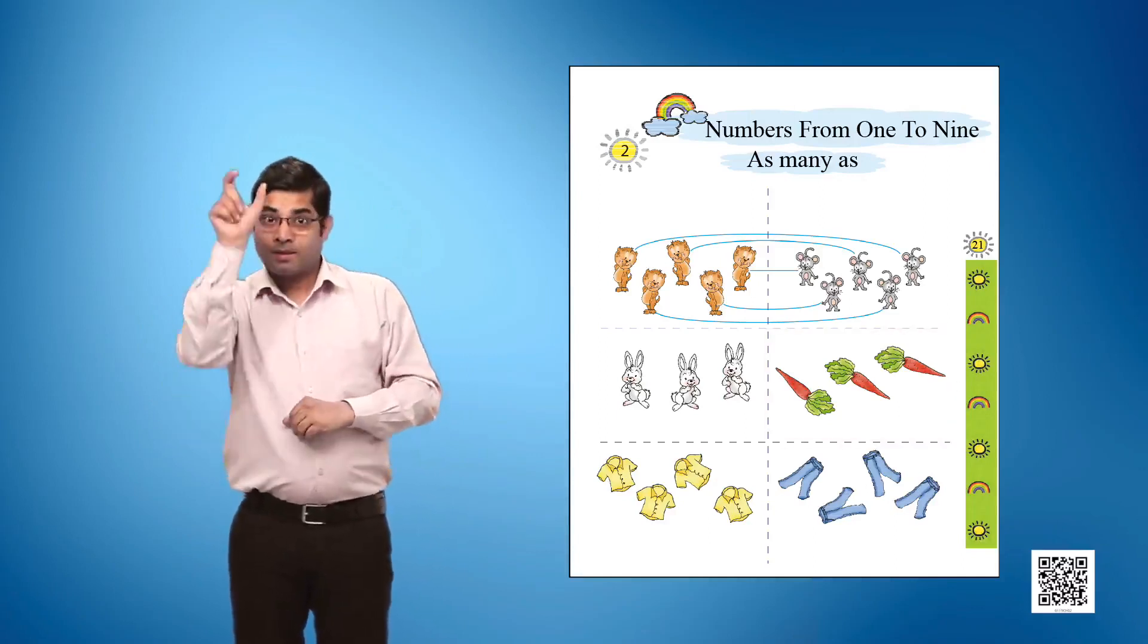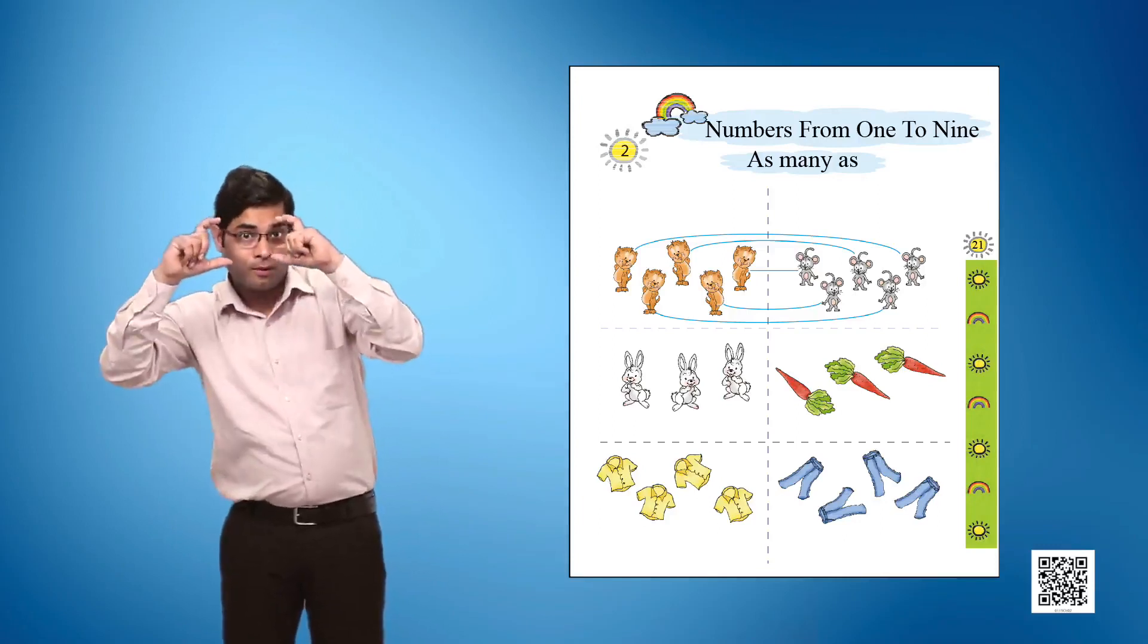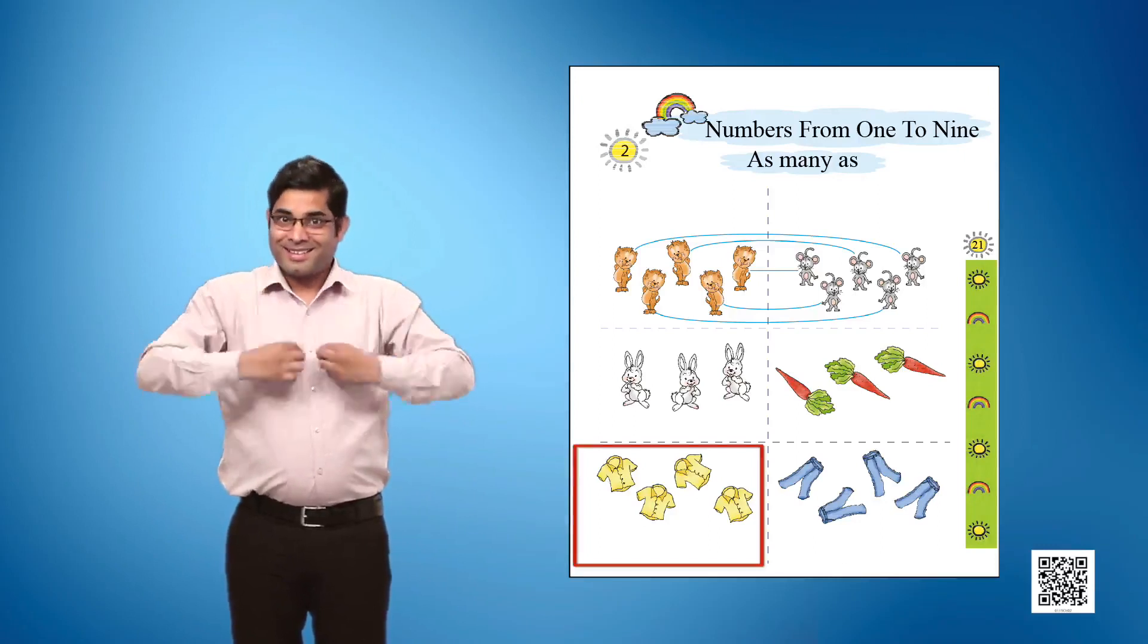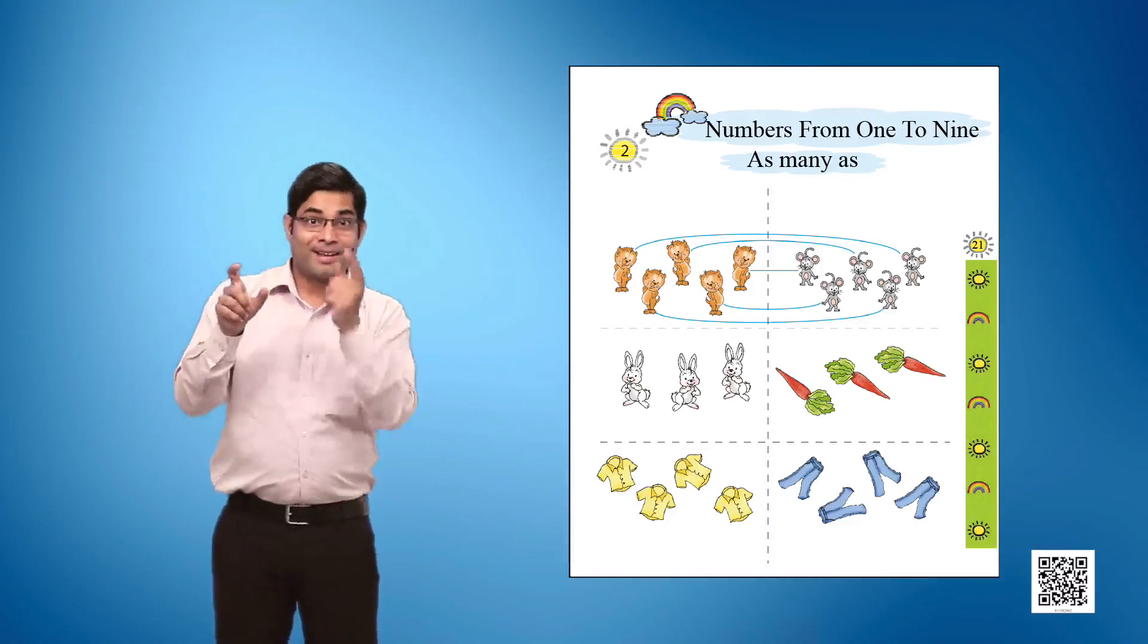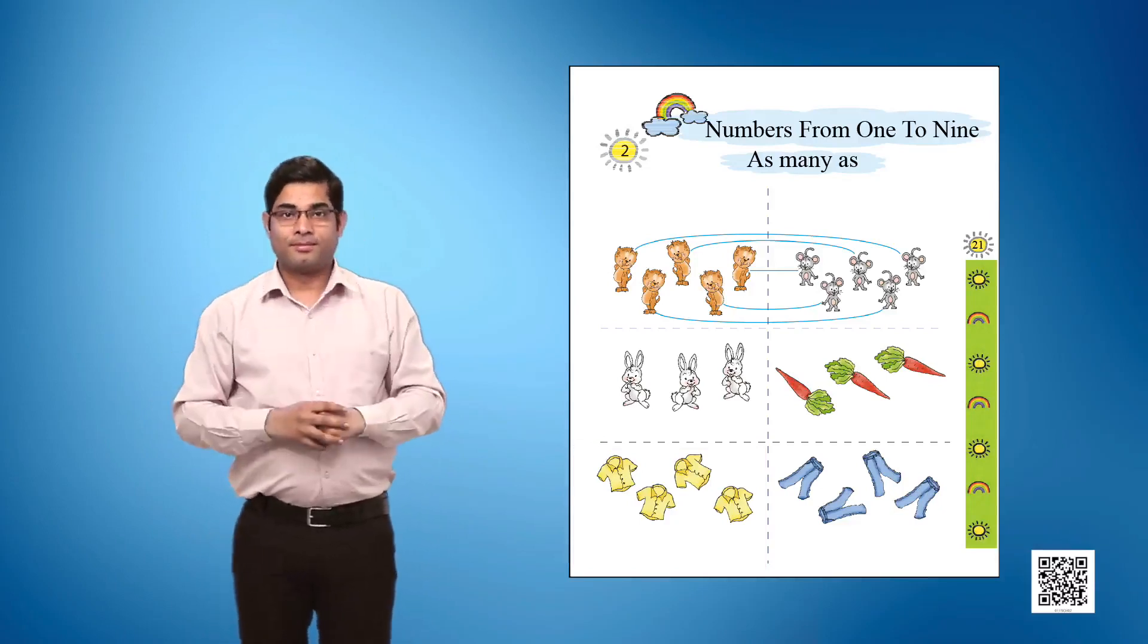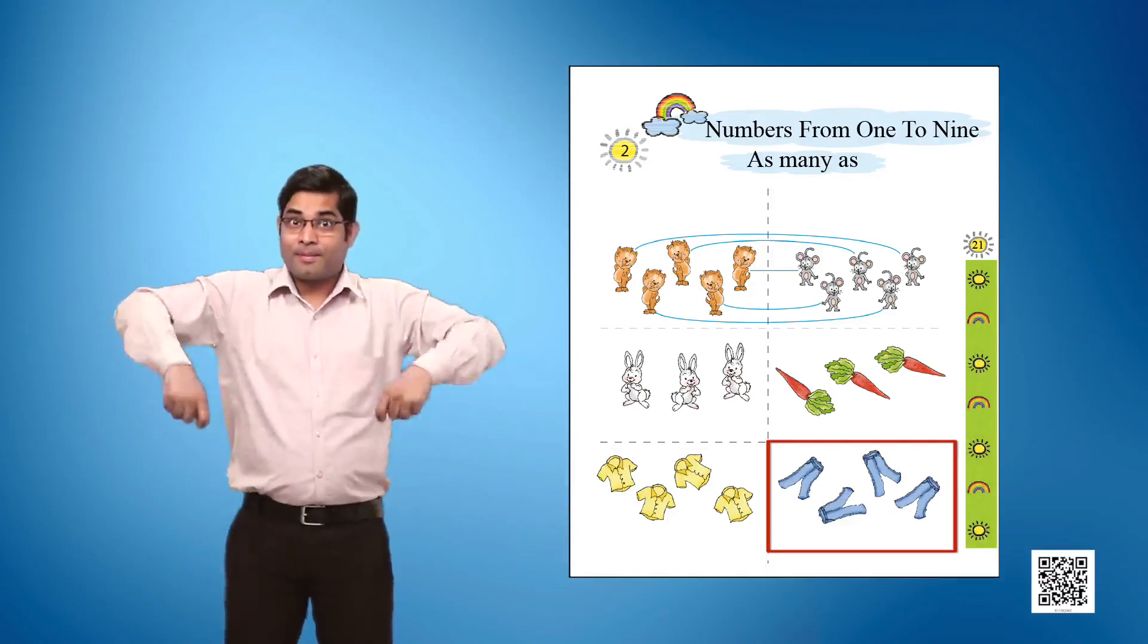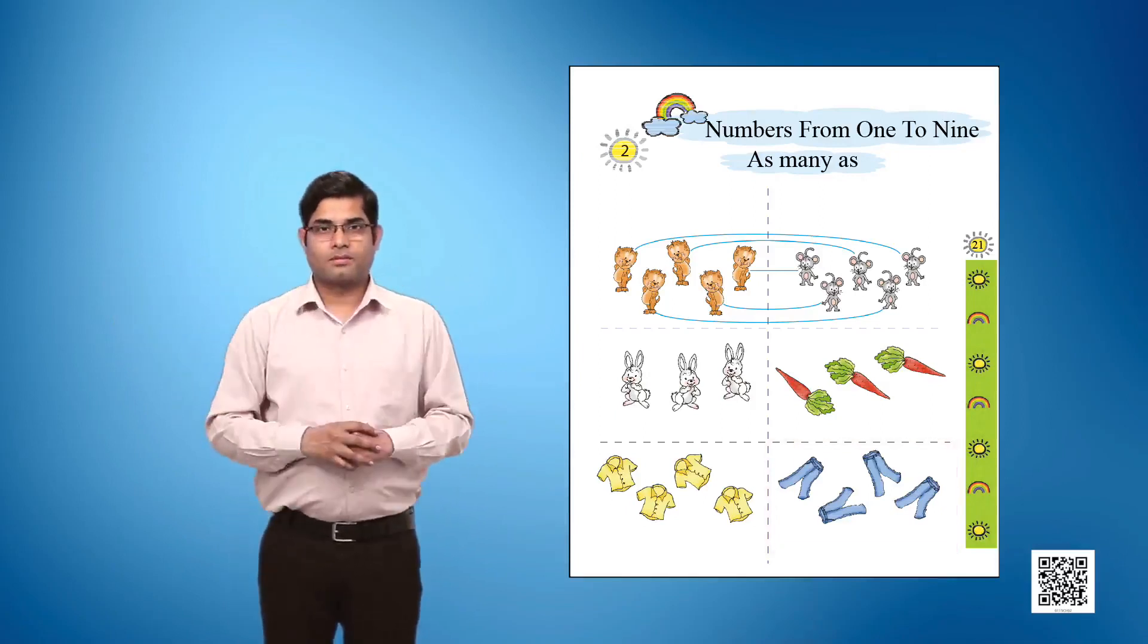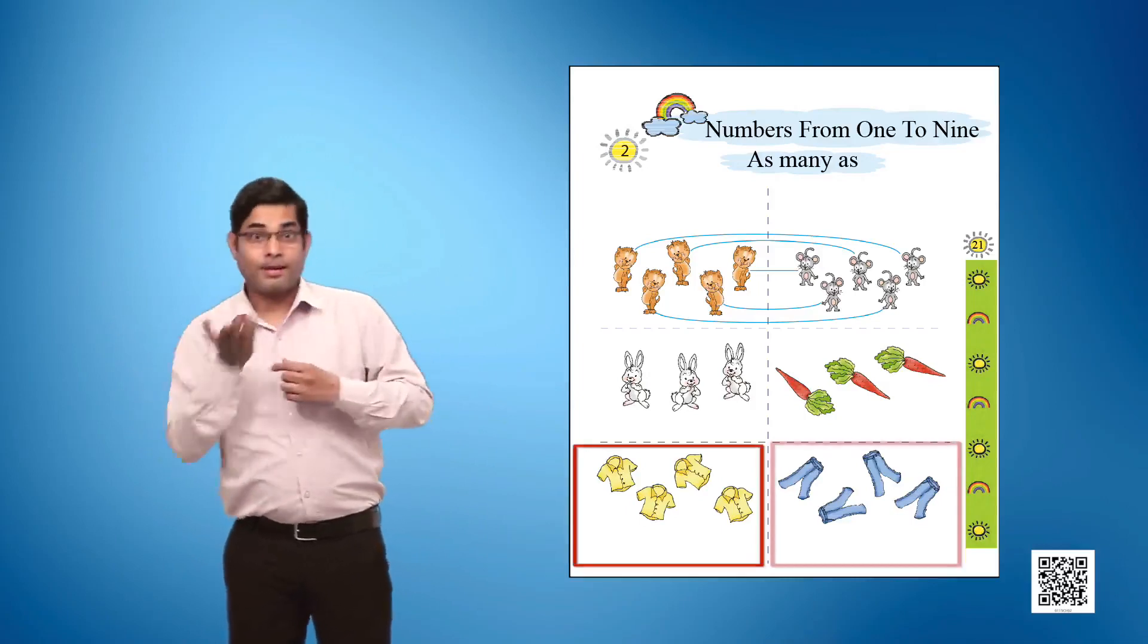Column 1, Picture 3 shows 4 shirts. Column 2, Picture 3 shows 4 pants. Activity 2: Match the shirts with the pants.